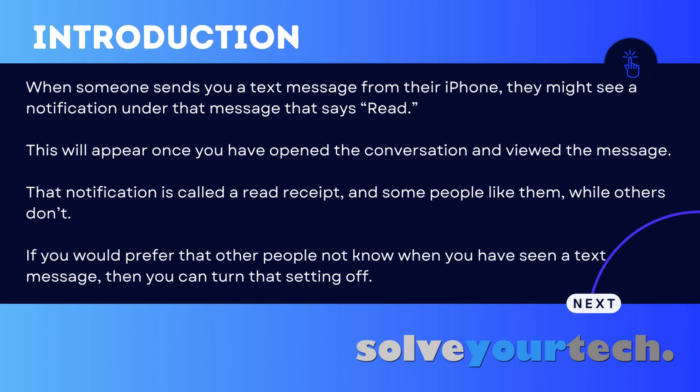When someone sends you a text message from their iPhone, they might see a notification under that message that says "Read." This will appear once you have opened the conversation and viewed the message. That notification is called a read receipt, and some people like them while others don't. If you would prefer that other people not know when you have seen a text message, then you can turn that setting off.